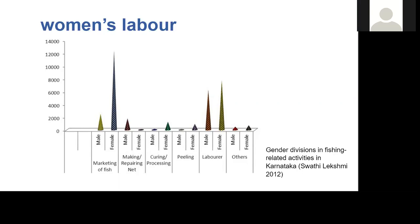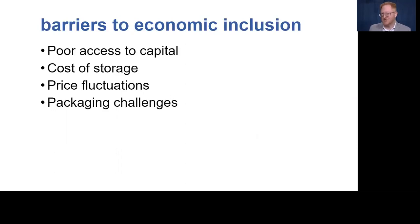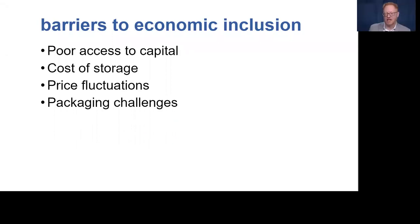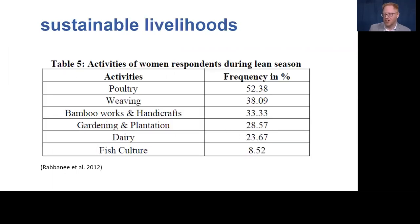In some countries women may run wholesale or retail businesses, sometimes independently of a processing operation. Several studies of women's labor in fisheries identify technical or material barriers to economic productivity — factors such as poor access to capital, cost of storage, price fluctuations, and packaging challenges — and tend to prioritize targeted interventions, especially microcredit, as avenues to economic inclusion. Conversely, Rabini and colleagues have modeled a more holistic sustainable livelihood approach, demonstrating that dried fish processors in Bangladesh draw regularly on valuable asset portfolios extending beyond fish, including poultry, weaving, and handicrafts, which provide significant income in the lean season.